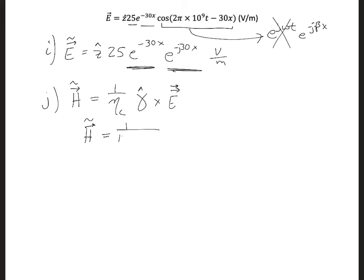It's 1 over 1,300 plus j 1,300. Gamma hat, that's the direction of propagation. That's x hat crossed with our E field expression here. So I'll just say here, E. So by the right-hand rule, x hat crossed with E, which is in the z direction, will give us a minus y hat.